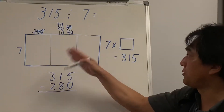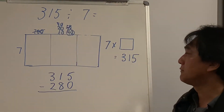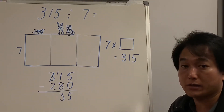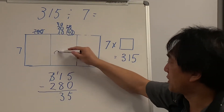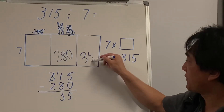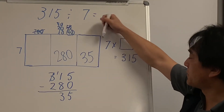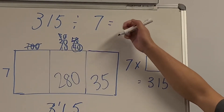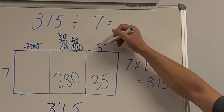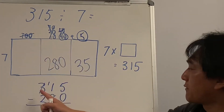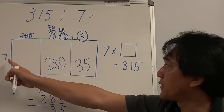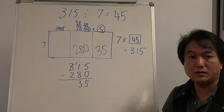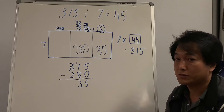I've used 280, and I have 35 cupcakes left. How many 7s make 35? 1×7=7, 2×7=14, 3×7=21, 4×7=28, 5×7=35. So if I have 315 cupcakes in 7 rows, I can make 45 columns. The answer is 45.